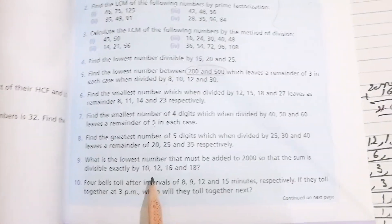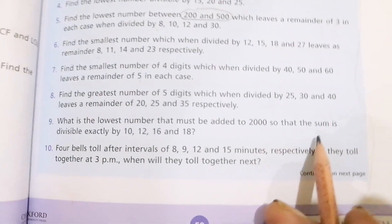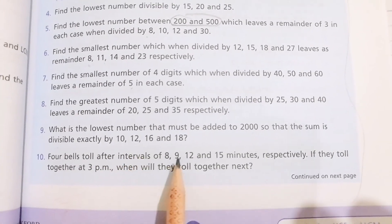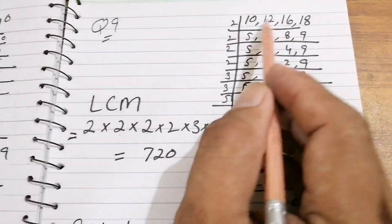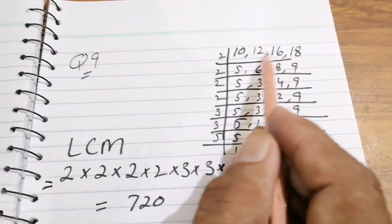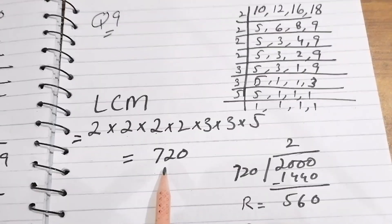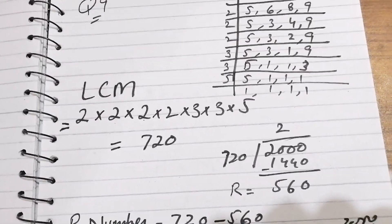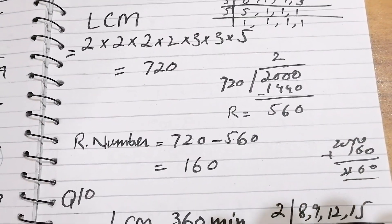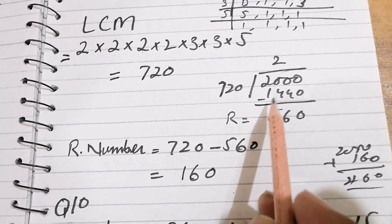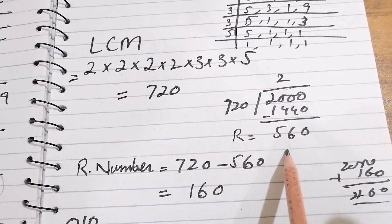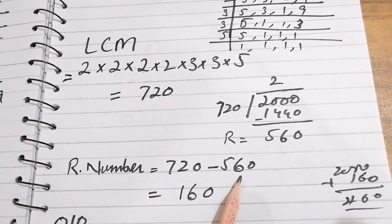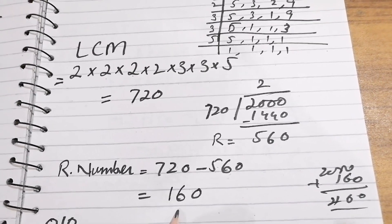Question 9: what is the lowest number that must be added to 2000 so that the sum is exactly divisible by 10, 12, 16, and 18? We take their LCM by division method and LCM = 720. Dividing 2000 by 720, the remainder is 560. From the LCM 720 we subtract the remainder 560, and we get the answer 160.